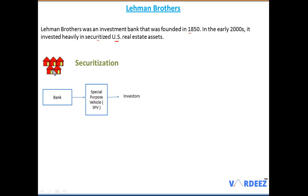Let's say a bank gives out a home loan to different mortgage holders. What the bank will do is gather a pool of mortgages and sell these mortgages to an SPV — also known as a Special Purpose Vehicle. This is a third-party legal entity. The bank transfers the pool of mortgages to the SPV, and the SPV then rolls out securities such as bonds to investors. Since the SPV is rolling out securities, that's how it got its name: securitization.